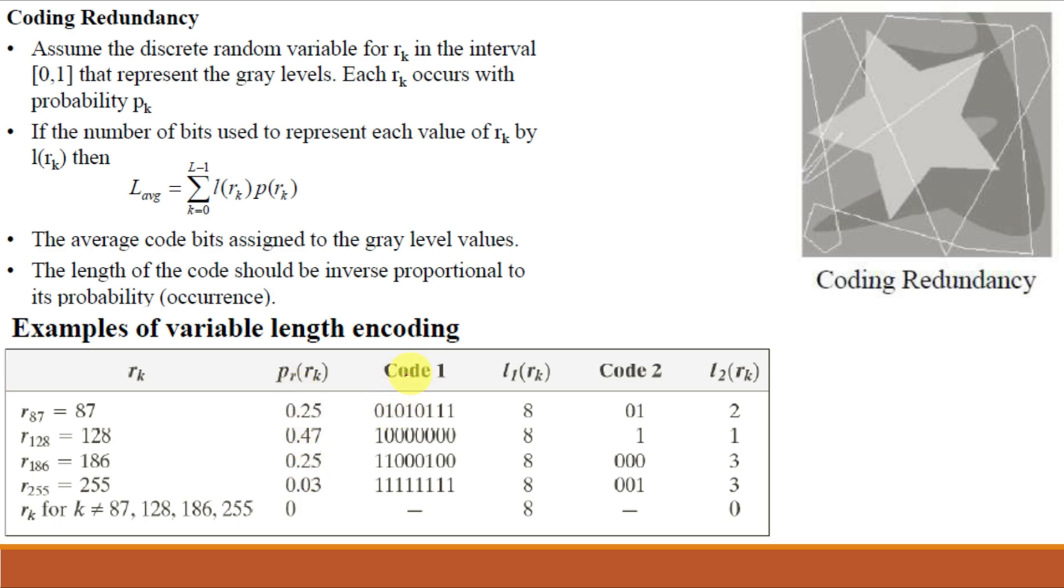These are the 8-bit representation of these intensities. Now coding redundancy says that if we have this limited number of intensities, rather than using an 8-bit code, we can go for variable length encoding. So rather than using the 8-bit code for 87, we can use 01 for 87. Similarly for 128, we use 1; for 186, 000; and for 255, 001.